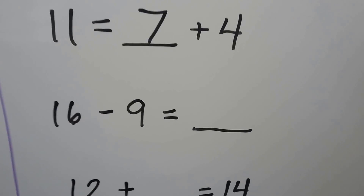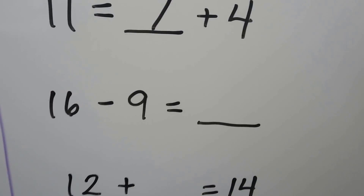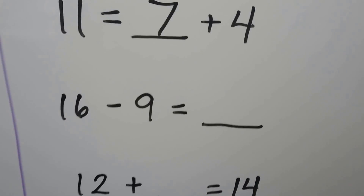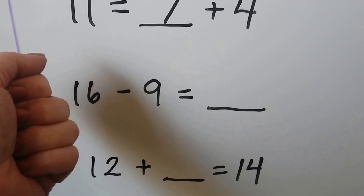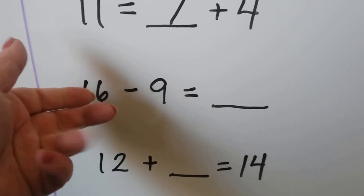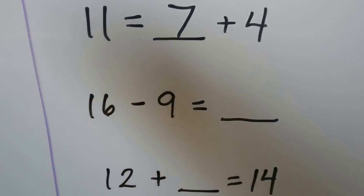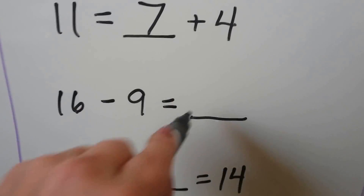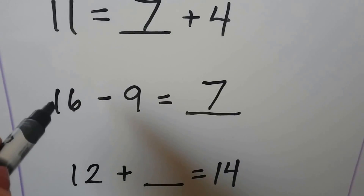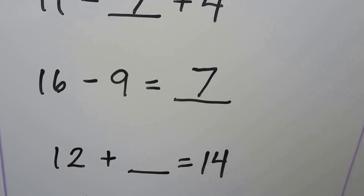16 minus 9 is equal to some number. We can use a related addition fact. Start with the 9 and count up to 16: 9, 10, 11, 12, 13, 14, 15, 16. That was 7 fingers. 9 plus 7 is equal to 16, so 16 minus 9 is equal to 7.